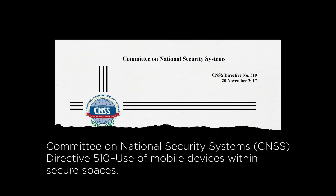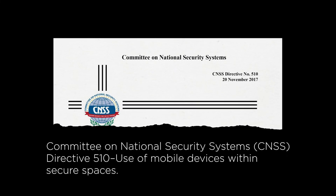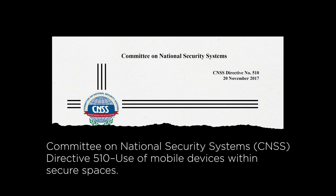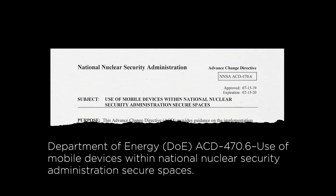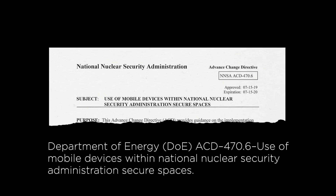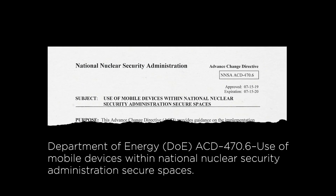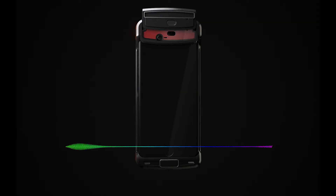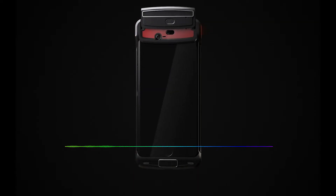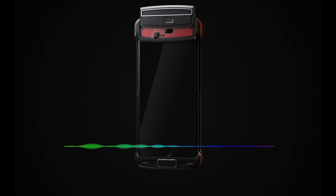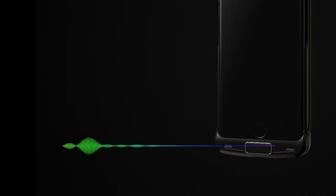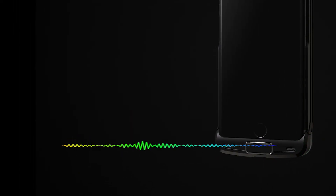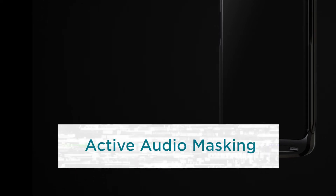The potential for mobile eavesdropping and spying is the very reason many agencies and departments have established requirements to control and minimize mobile device risk. Proprietary audio masking floods each of the smartphone's microphones with randomized noise, ensuring that a compromised smartphone can't capture a conversation's content or context.